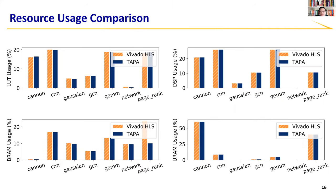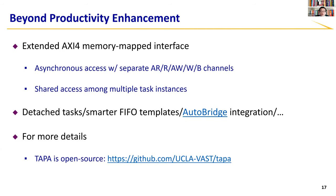This slide shows that TAPA's productivity improvement is not at the cost of decreasing quality of results. Resource usage is almost identical comparing standard HLS and TAPA. One exception is PageRank, whose BRAM usage with TAPA is almost only half of that with Vivado HLS. This is because TAPA uses a smarter FIFO template that uses shift register LUTs when more efficient than BRAMs, which also explains why the LUT bar is higher for PageRank with TAPA.